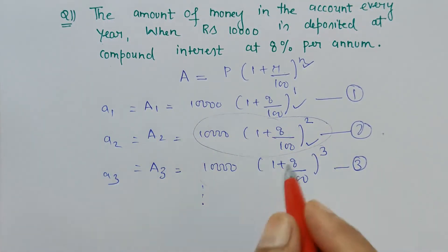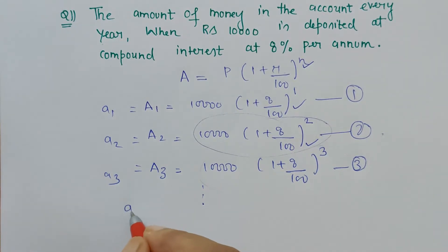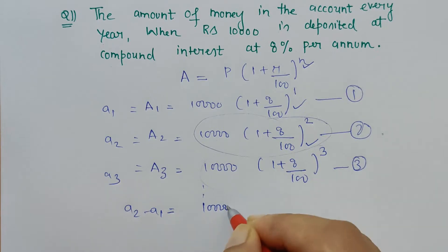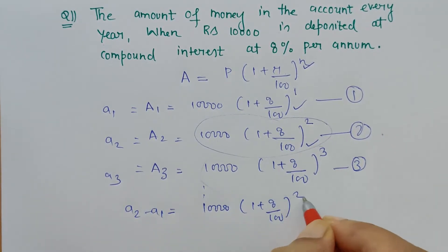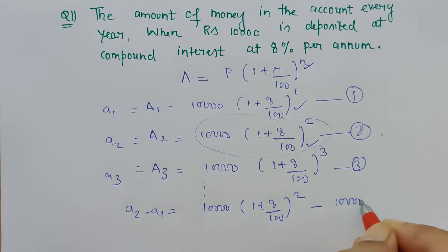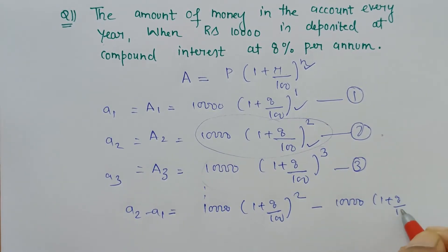a₁, a₂, a₃, isn't it? These are the terms of the sequence. So when we do a₂ - a₁, what do we get?